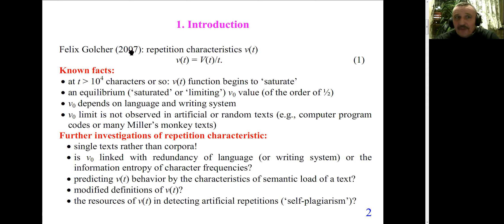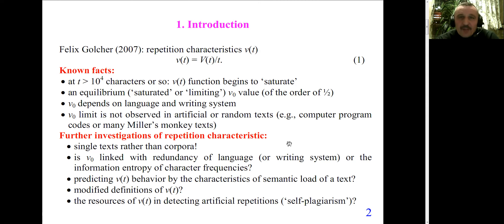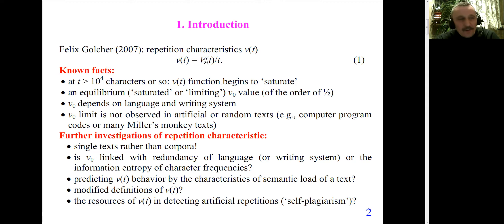In 2007, Golher introduced his repetition characteristic. This characteristic V(t) is defined in a very simple manner: it is simply the size of vocabulary of n-grams which have been repeated in a text at least once and which represent so-called completed repetitions. So we have the vocabulary of repetitions which have occurred up to a current position in a text, divided by this current position t.